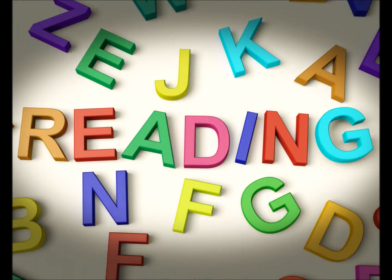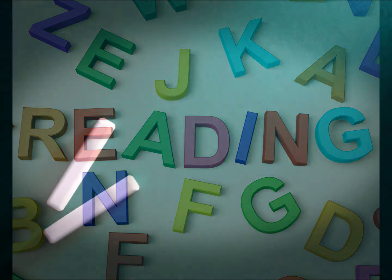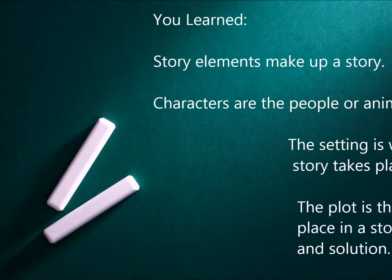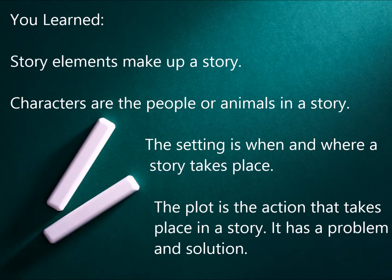As you can see, there are so many pieces that get put together to make a good story. Today you learned: story elements make up a story. Characters are the people or animals in a story. The setting is when and where a story takes place. The plot is the action that takes place in a story — it has a problem and solution.